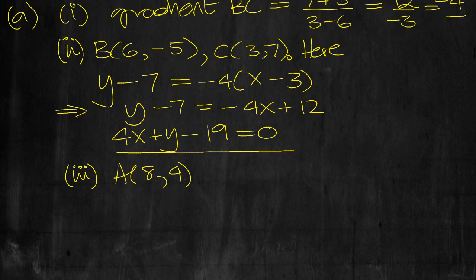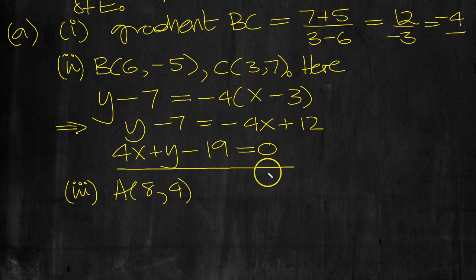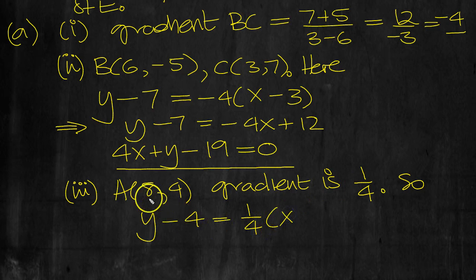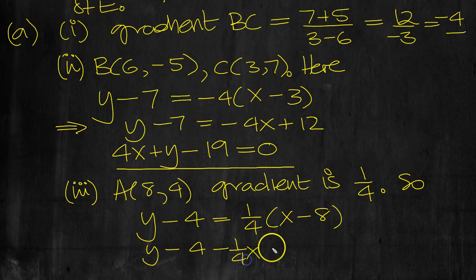Perpendicular to BC where the gradient of BC is minus 4, so the gradient is one quarter. The line Y minus 4 equals one quarter times X minus the X value at A, which is 8.